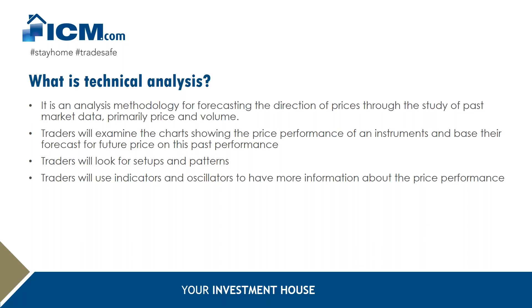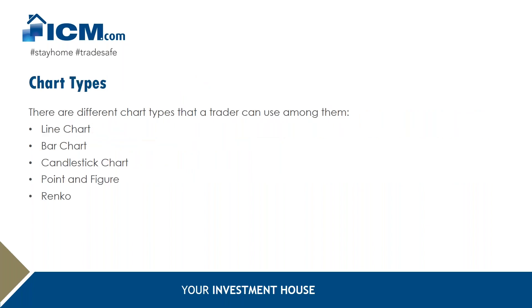Moving forward, we will start by explaining different chart types: the line chart, bar chart, candlestick chart, point and figure, and Renko. Some of you who have been trading for a while may have heard of the line chart, bar chart, and candlestick, which are available on the MetaTrader 4 platform. There are also other chart types — point and figure and Renko — which are relative of time and can be beneficial for some traders.